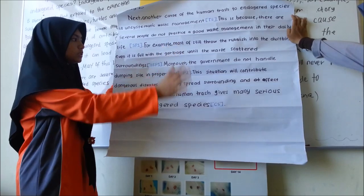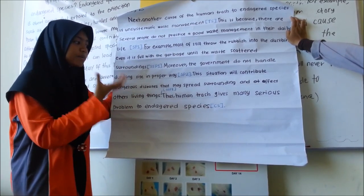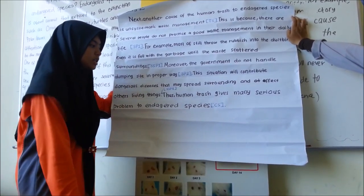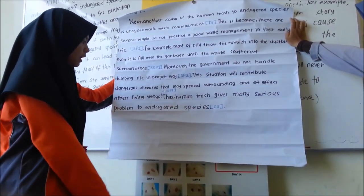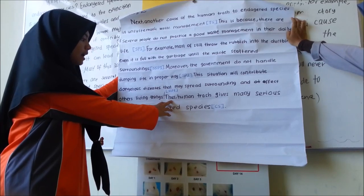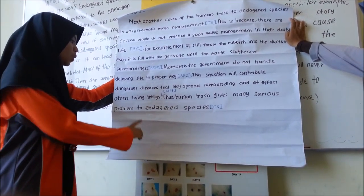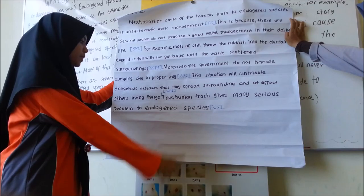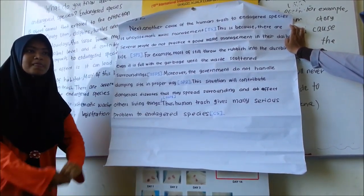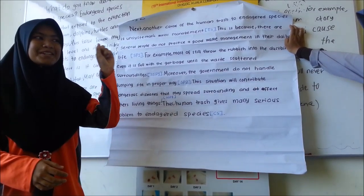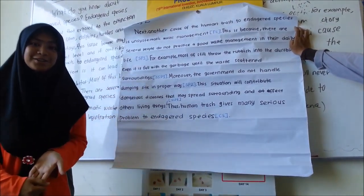For all paragraphs, we must do a mini summary — that is the concluding sentence. My concluding sentence is: thus, human threats give many serious problems to endangered species. That's my part. Now I proceed to body paragraph three, to my group member Salmi. Thank you.